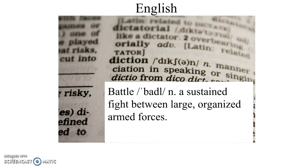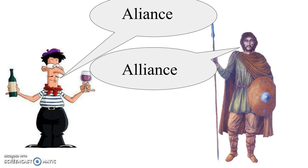It is important to notice, however, that when the Anglo-Saxons began using Norman French vocabulary, they did so by mimicking the sounds that the Normans made in speech, and it was later that spelling was adopted for these words. Therefore, the spelling and pronunciation often ended up slightly different when compared to the French words being mimicked. For example, the Normans used the word 'aliance' and the Anglo-Saxons heard and eventually began using the word 'alliance.'